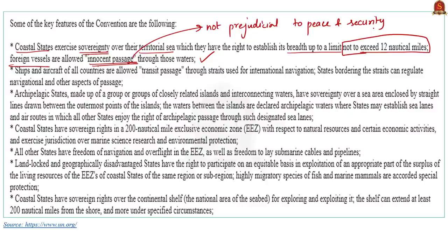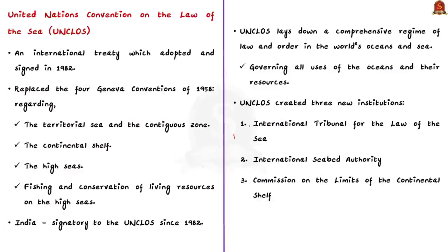Ships and aircraft of all countries are allowed transit passage through straits used for international navigation, but states bordering the strait can regulate the navigation and other aspects of passage. The coastal states have sovereign rights in a 200 nautical mile exclusive economic zone with respect to natural resources and certain economic activities, and they may exercise jurisdiction over marine science research and environmental protection. The convention has created three institutions: the International Tribunal for the Law of Sea, the International Seabed Authority, and the Commission on the Limits of Continental Shelf.